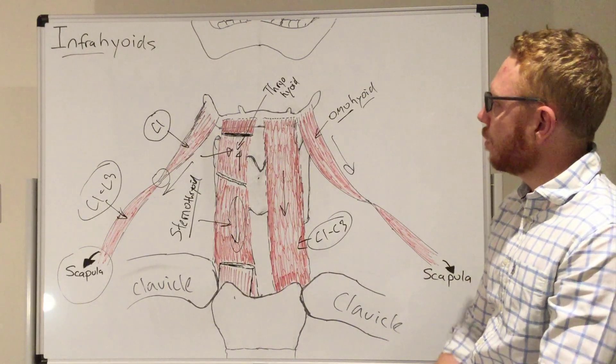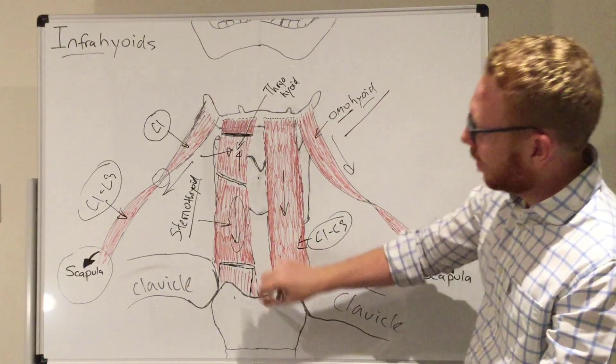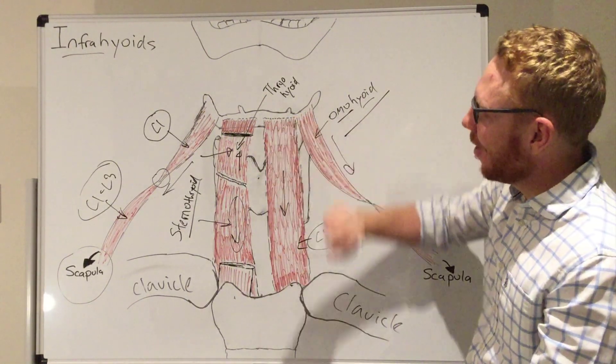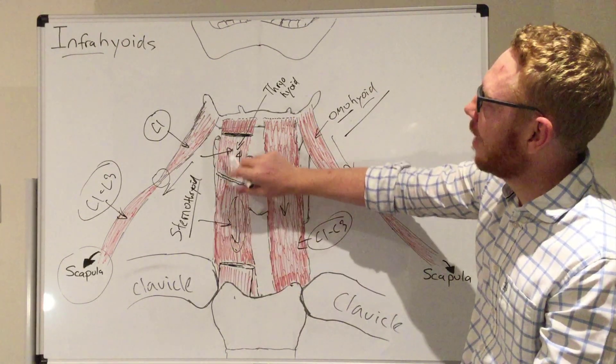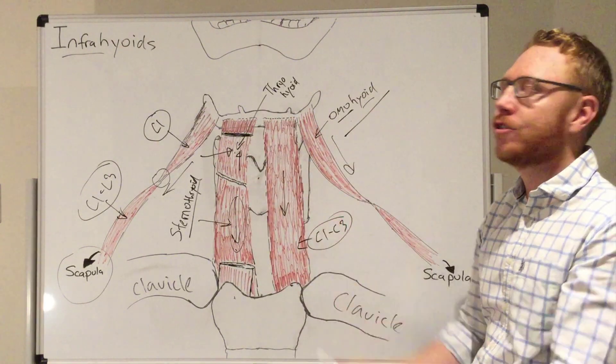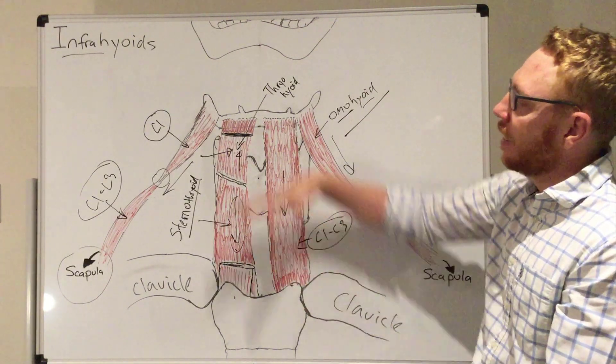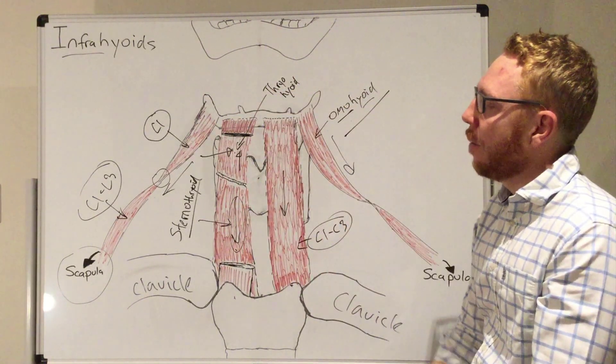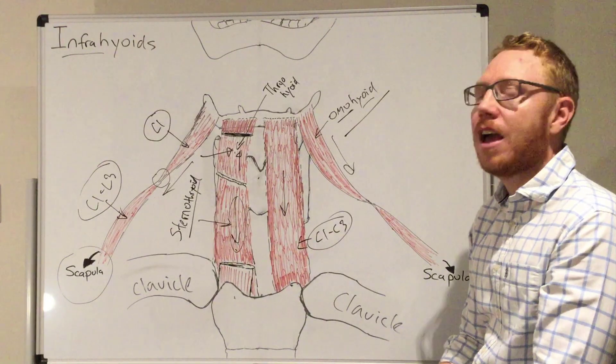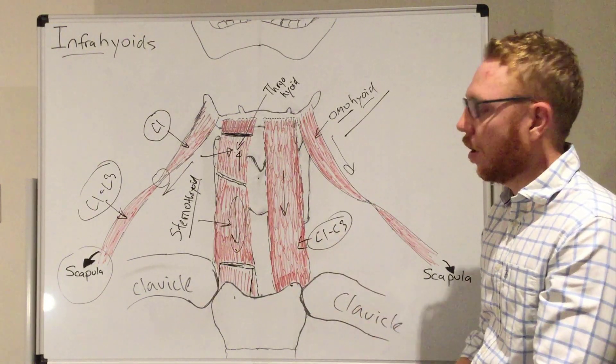So there we have it. We've got the four muscles: the omohyoid, the sternohyoid, the sternothyroid, and the thyrohyoid muscles. They're all considered the strap muscles of the neck. As a collective, they will depress the hyoid. But as you can see, they do slightly different things when they're acting on their own.